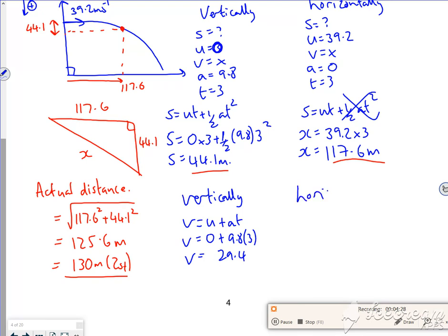Horizontally, we said it was constant. Hang on, pause. So V is 39.2.